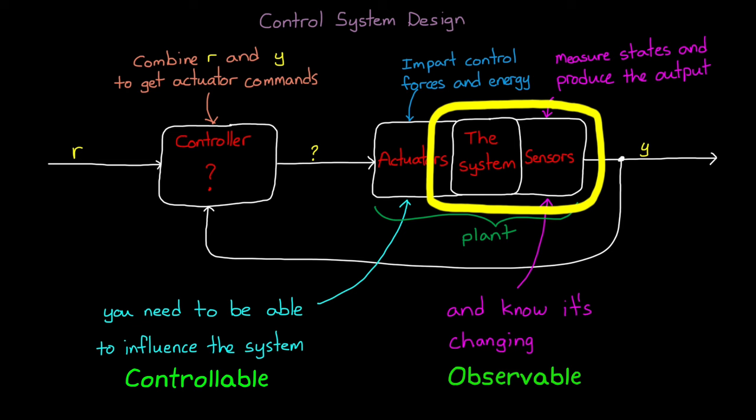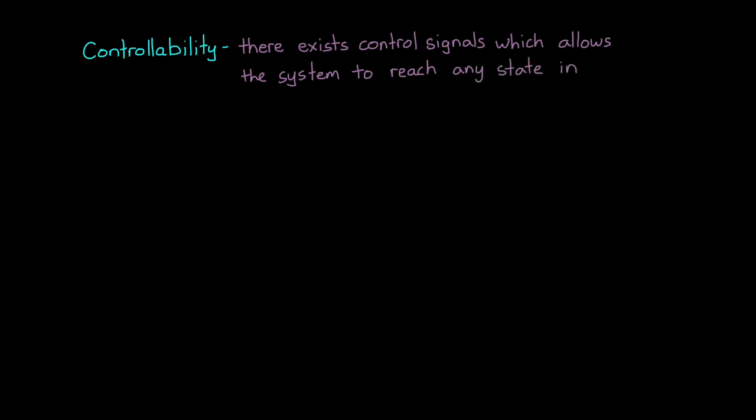Let's look at a formal written definition of the two. Controllability means that there exists control signals which allows the system to reach any state in a finite amount of time. This is also called reachability. An important thing to realize is that controllability does not mean that the state must be maintained or held at that condition, just that it can be reached.